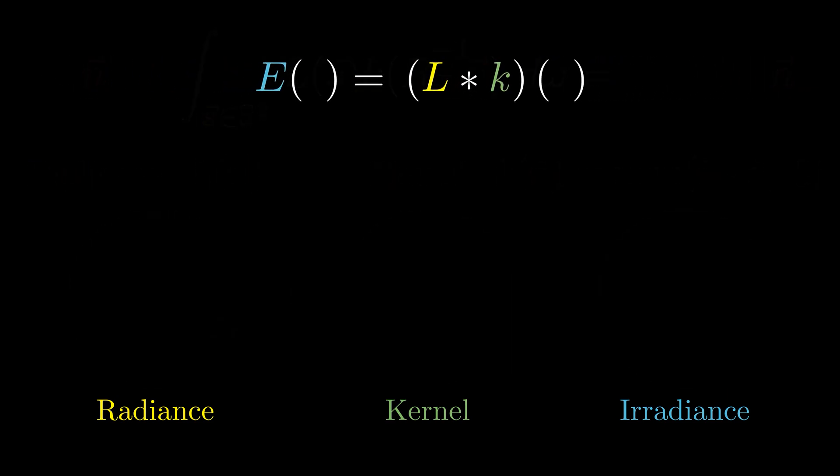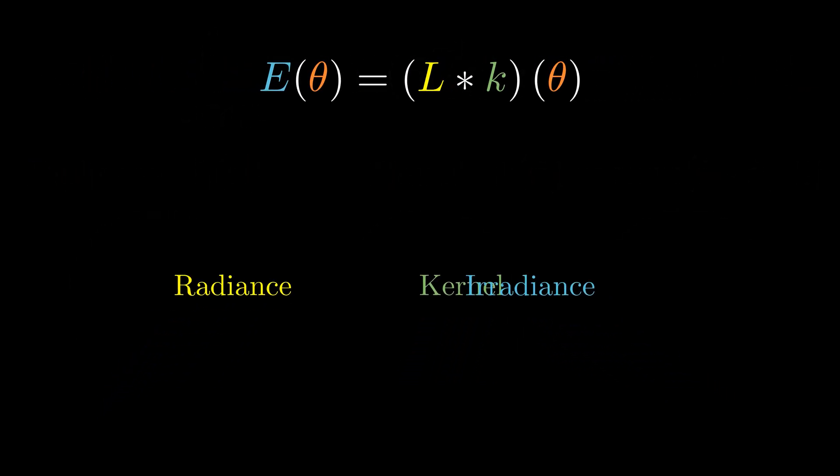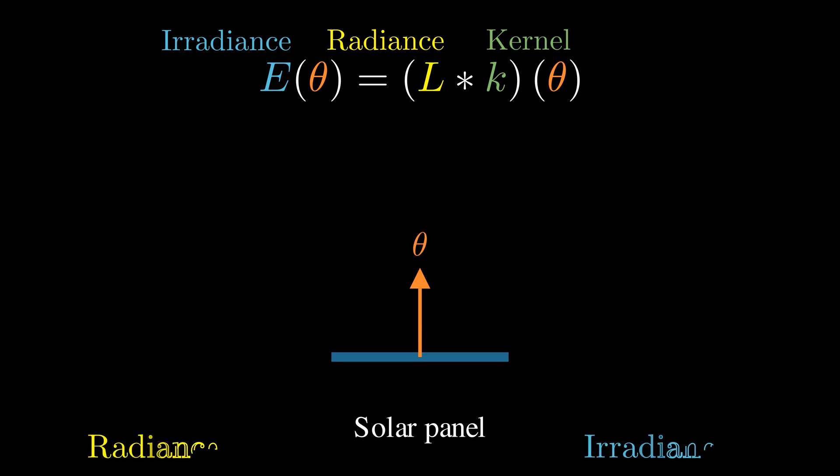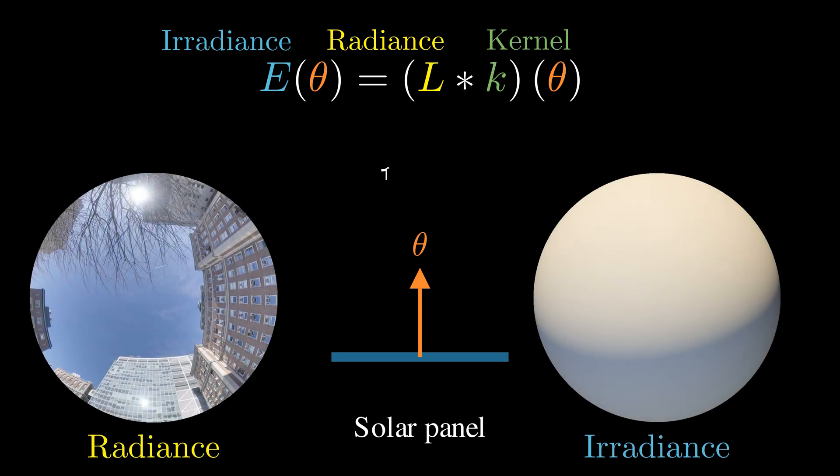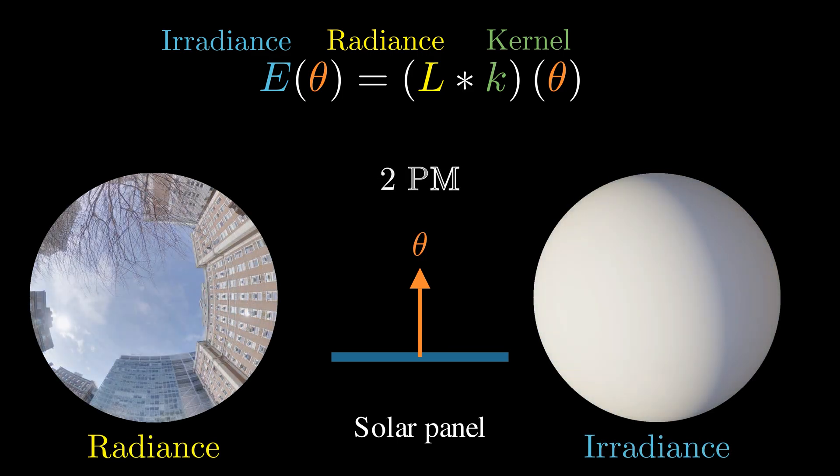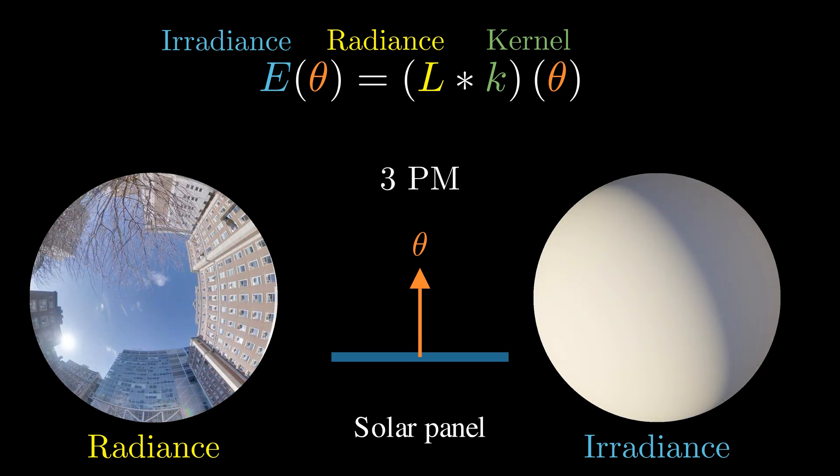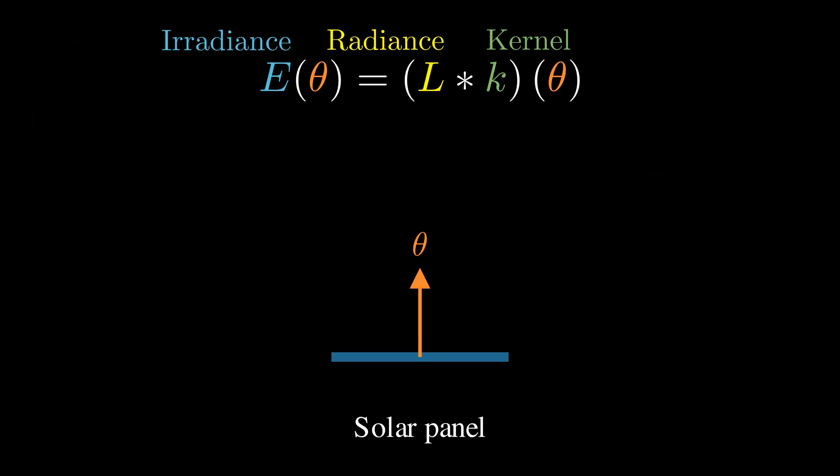So now the question is, how do we find the optimal orientation θ? This optimal direction clearly depends on the time of day and the lighting conditions. One idea is to mount a fisheye camera near the panel. This camera can capture the full radiance from all directions. From that we can compute the direction that gives maximum total irradiance. But there's a catch. This adds additional hardware cost and the camera itself is power hungry.